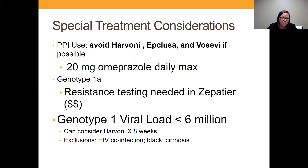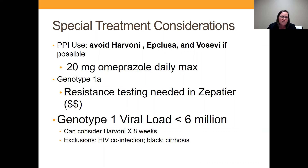I would recommend avoiding Harvoni, Epclusa, and Vosevi if patients are on proton pump inhibitors, especially if they're greater than 20 milligrams. Even at 20 milligrams, if we can go a different route I typically do. Or if we can get them from omeprazole down to ranitidine maybe once a day to increase their chances of treatment success.